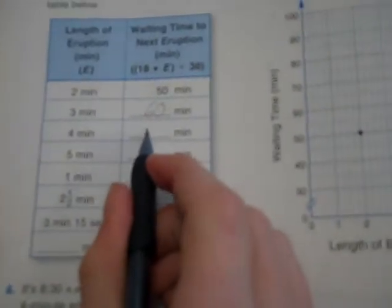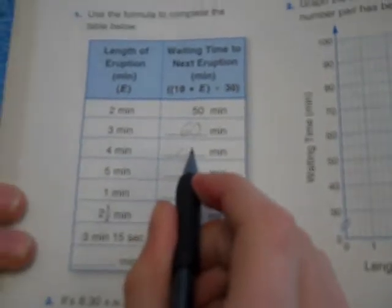Okay, let's keep going. Now, what's the next one going to be? Because it says 4 here, we'll do, we take this E and replace it with 4, because it's from here. 10 times 4 is 40, plus 30 is 70.